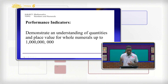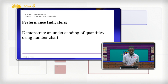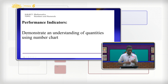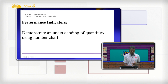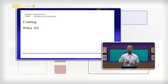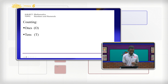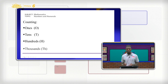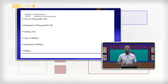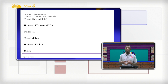We will also use what we call the number charts to make us understand numbers. In our lessons, we talk about the stages of counting: we count in ones, in tens, in hundreds, in thousands, in tens of thousands, in hundreds of thousands, in millions, in tens of millions, in hundreds of millions, and then we end at billion.